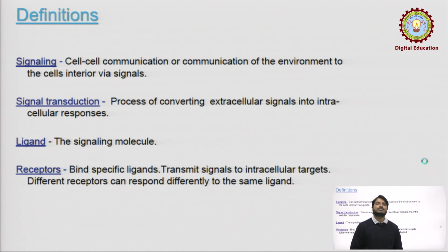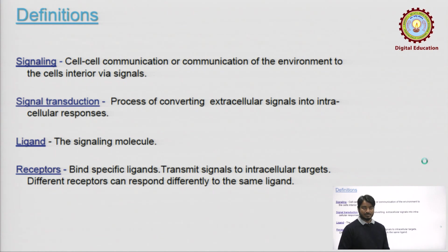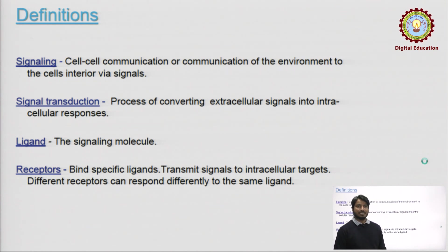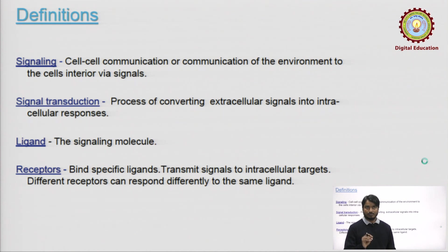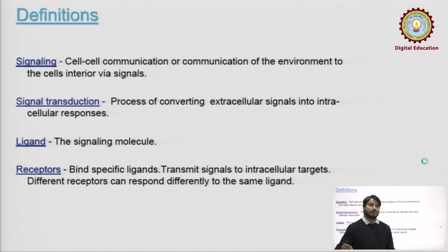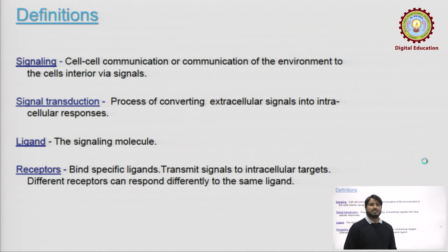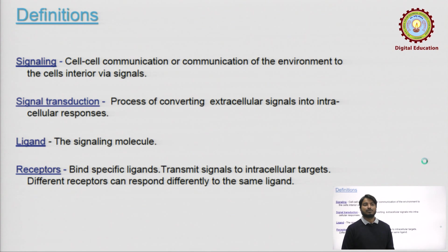These are some definitions required to understand signal processing. First, signaling: cells communicate with other cells, either nearby or from a distance. Second, signal transduction: a process in which the signal molecule binds to the receptor, and the receptor generates an intracellular mechanism inside the cell in response to that signal.